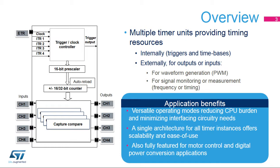Three application notes complement the timer sections in the reference manual. AN-2592 gives a practical implementation of a 32-bit timer made of two synchronized 16-bit timers, useful for better understanding the timer synchronization mechanism, and comes with a software example. AN-4013 provides a more detailed overview of all timer features and available firmware examples. AN-4507 presents an implementation of PWM resolution enhancement by means of dithering techniques, also with a software example.